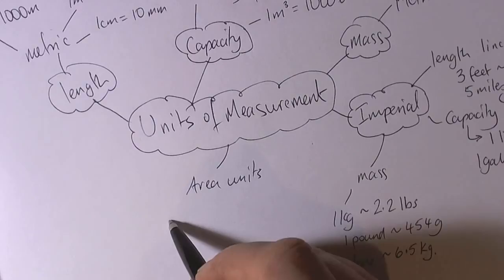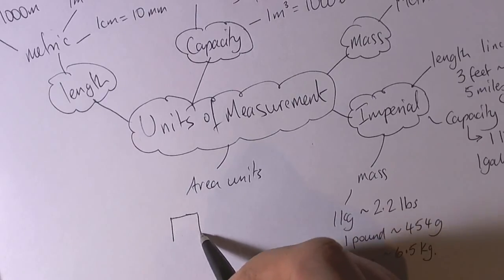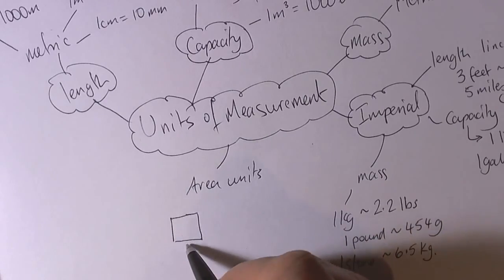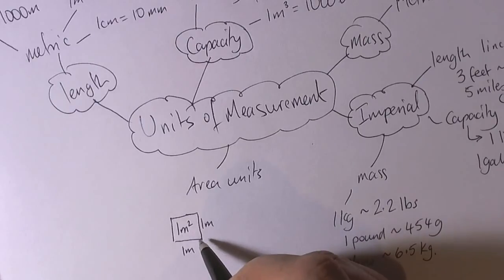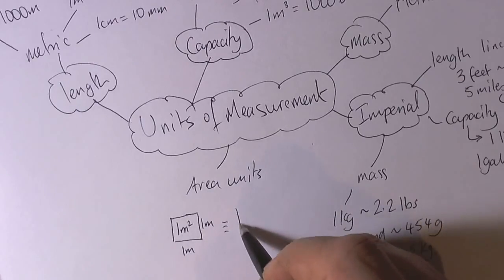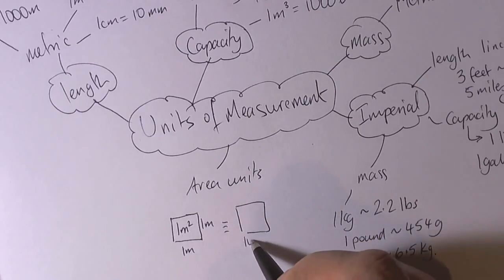So we have area units. The best way to remember those is to think of a square. So a square metre is made up of a metre length by a metre length. So that's equivalent to changing it into centimetres.